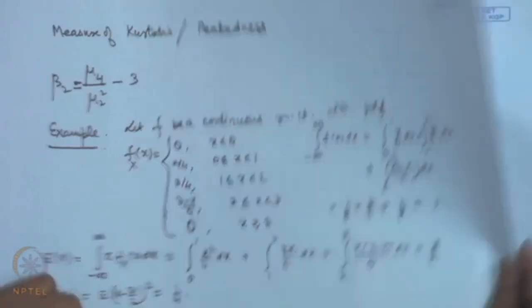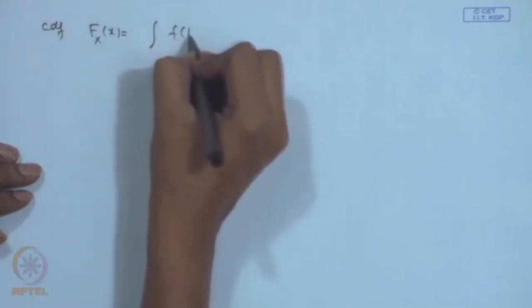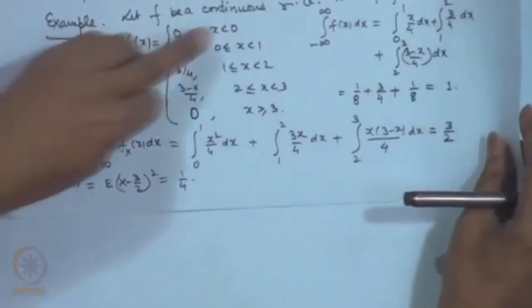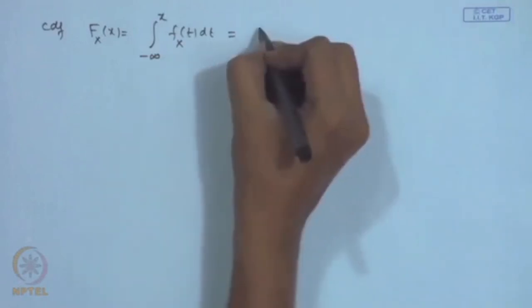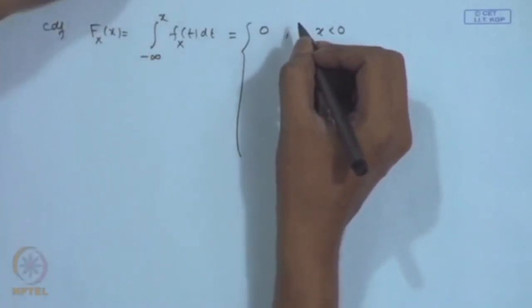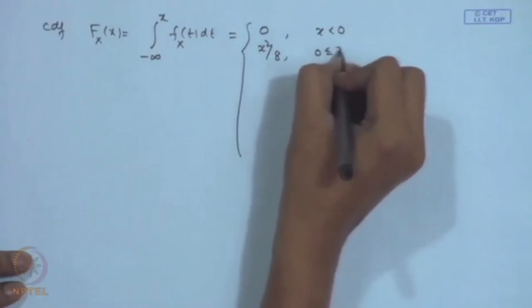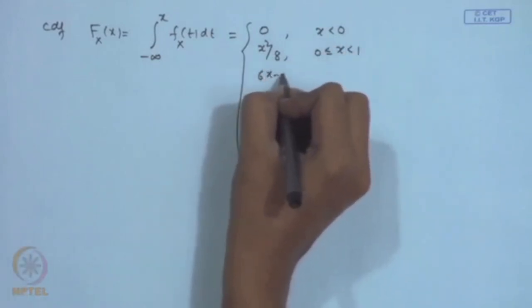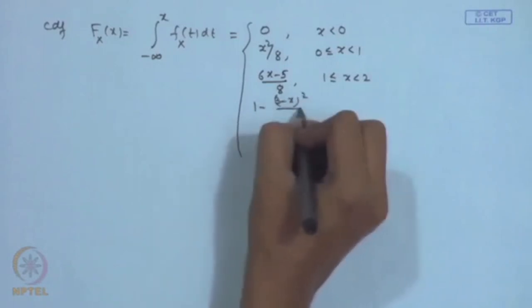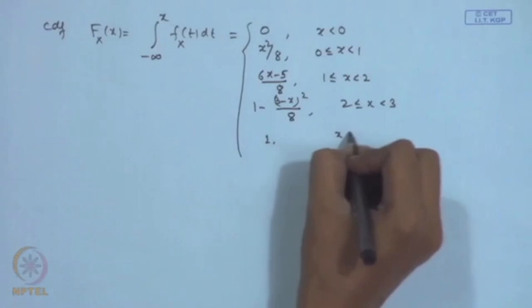The CDF for this example is: F(x) = 0 for x < 0; x²/8 for 0 ≤ x < 1; (6x−5)/8 for 1 ≤ x < 2; 1 − (3−x)²/8 for 2 ≤ x < 3; and 1 for x ≥ 3.